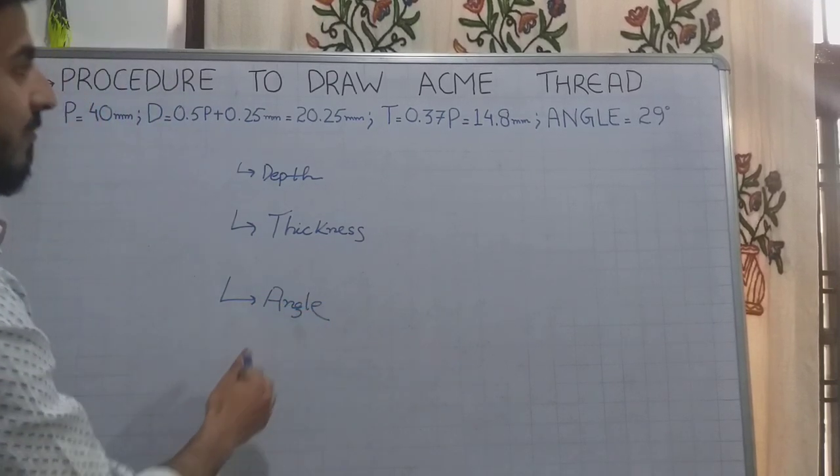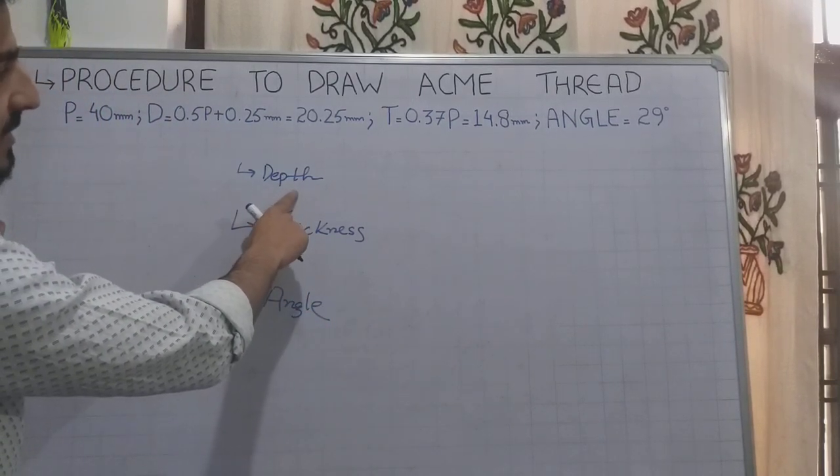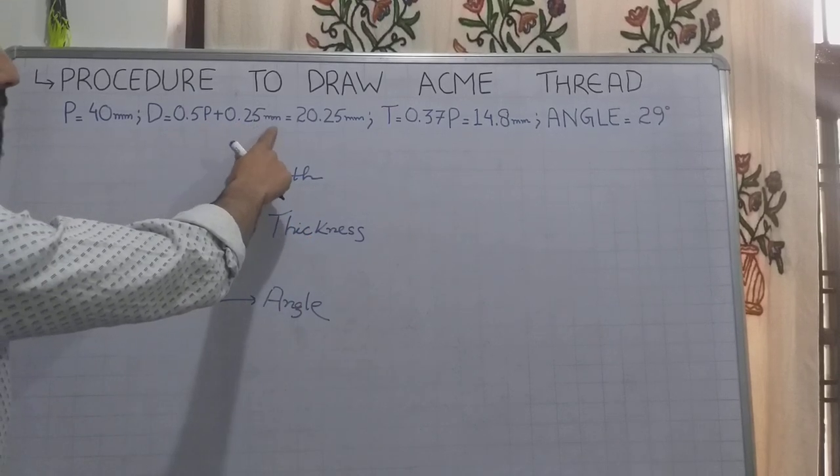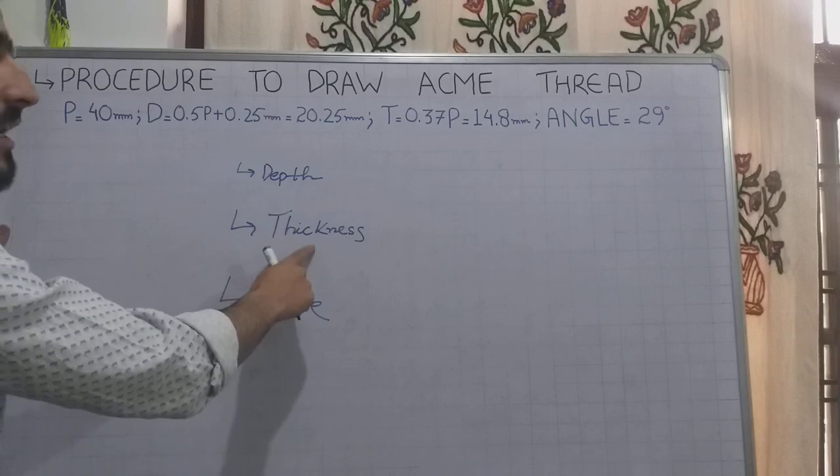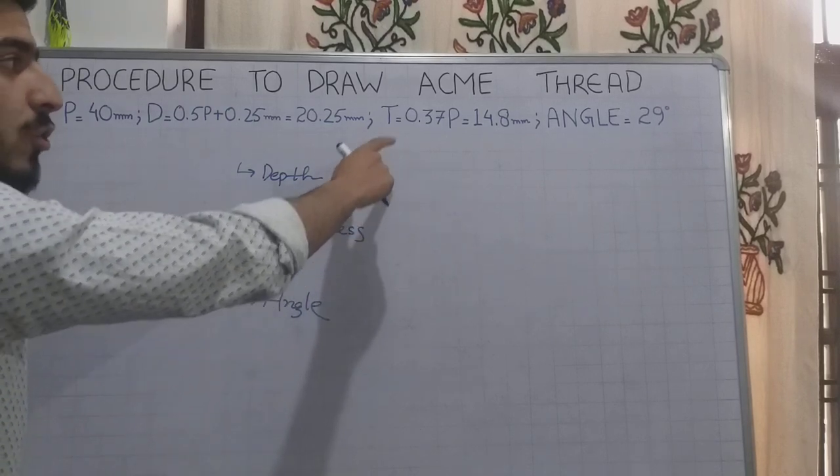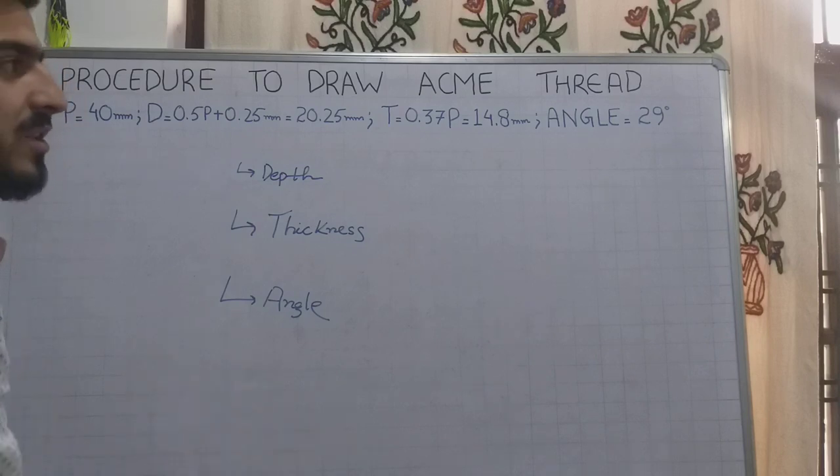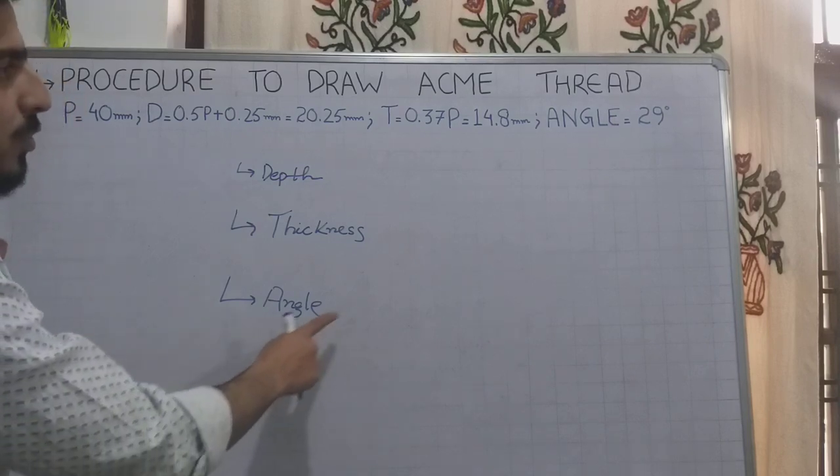In the case of Acme thread, the depth of the thread is 0.5p plus 0.25mm. And the thickness in the case of Acme thread is always 0.37p. And the Acme thread angle is 29 degrees.